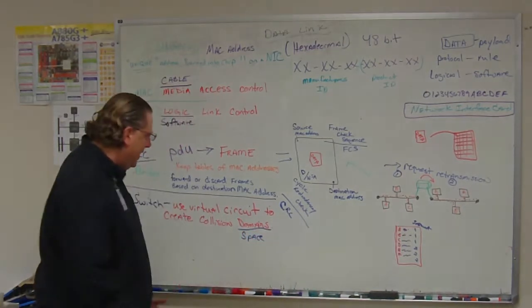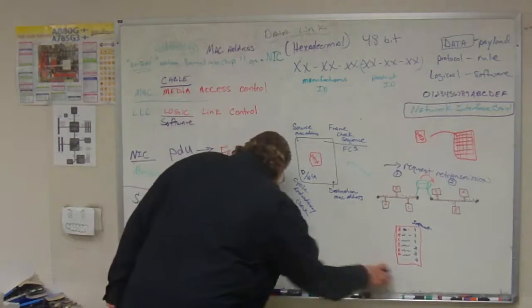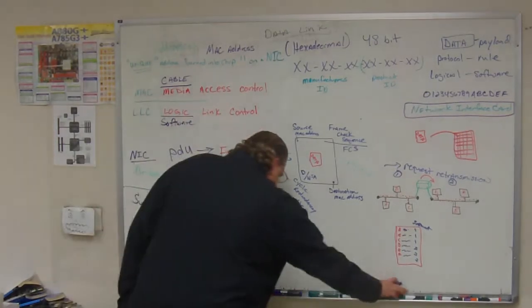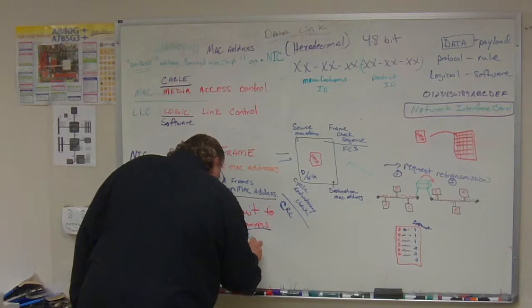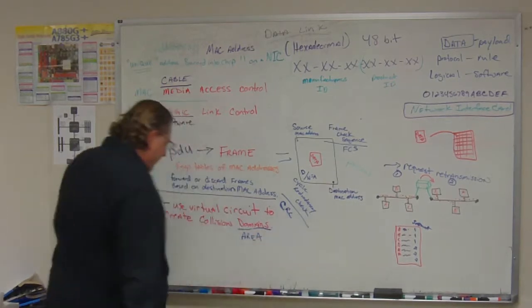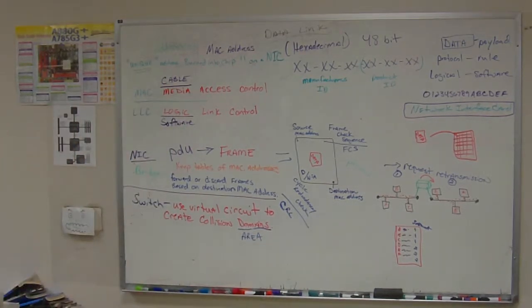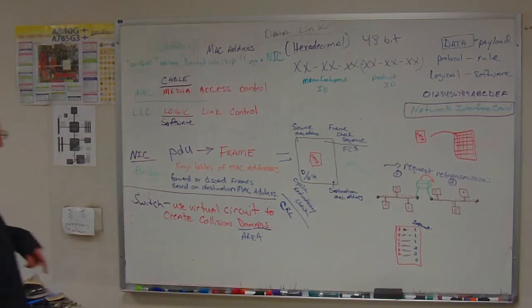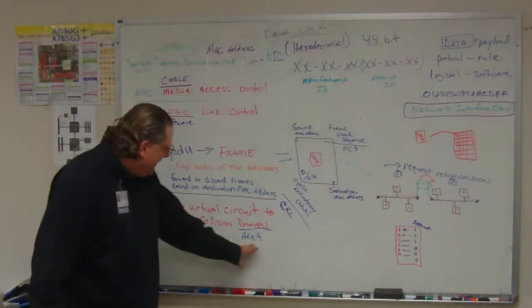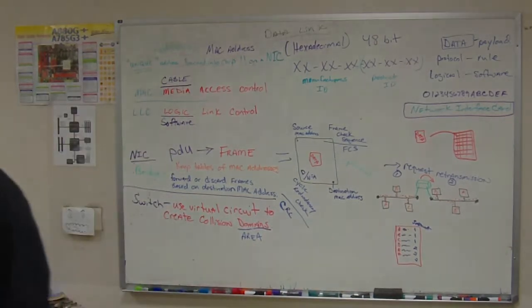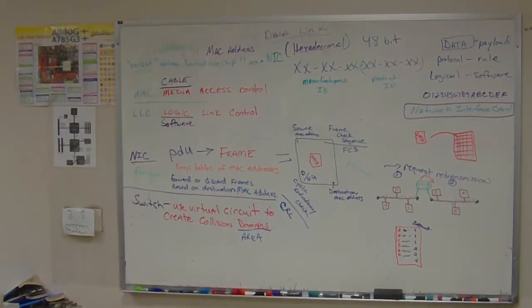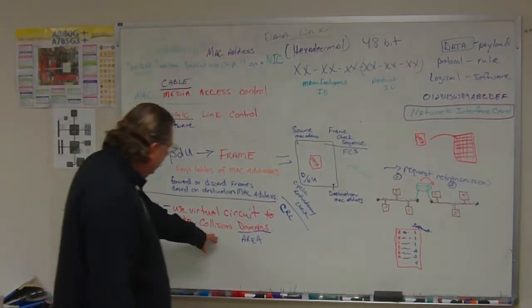So domain is an area, in this case. And actually, it fits even with the other way that we're using domains. When we talk about webpages and stuff, but we'll wait until we get there. We use virtual circuits to create collision areas. Oh, does that make a little more sense? So now, what is a collision area? Does that make more sense to answer instead of like, what is a collision domain? Now I want you to tell me, what is a collision area?